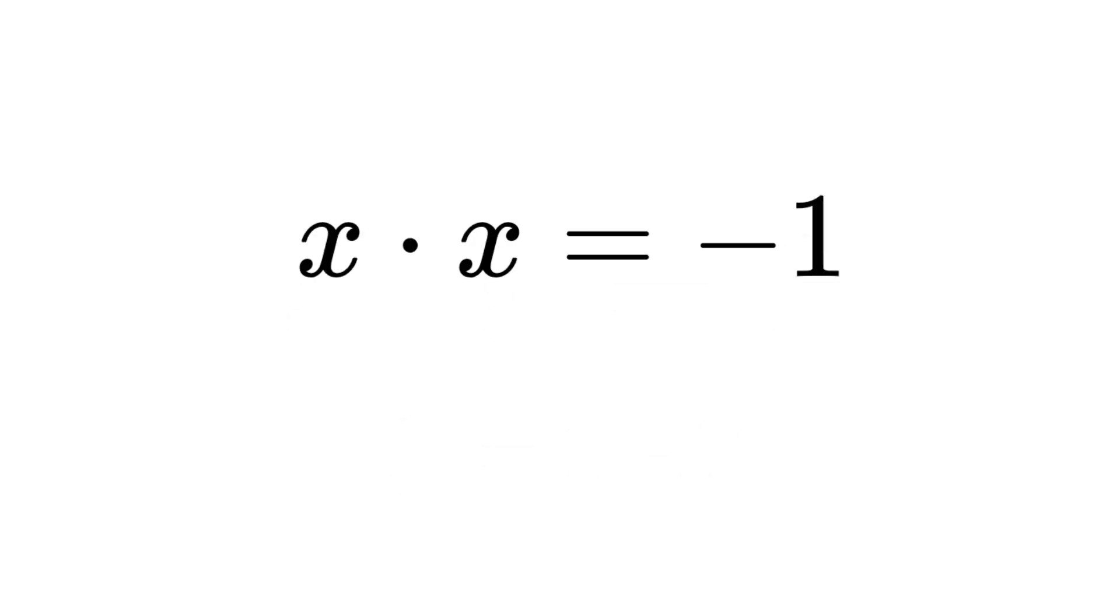However, when we try to solve an equation like x times x equals negative one, we found that there isn't a single real number that satisfies this equation. To address this, mathematicians assumed that the square root of negative numbers is complex, and the unit complex number i is defined as the square root of negative one.